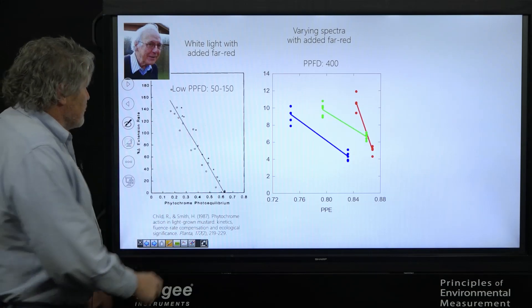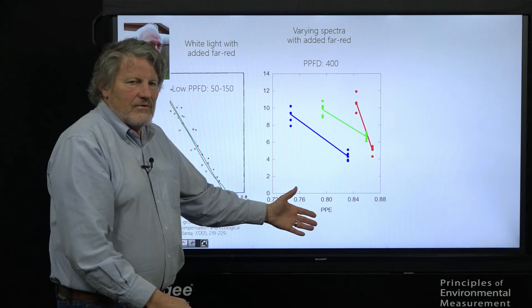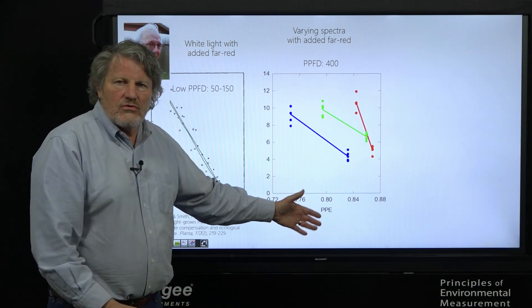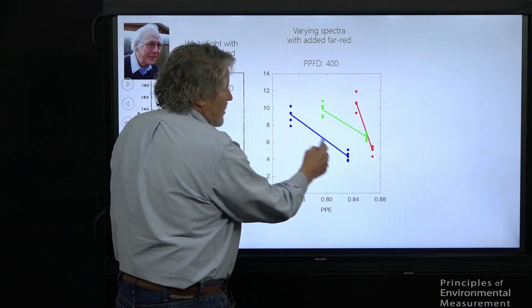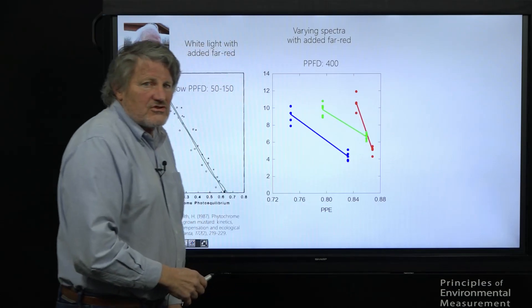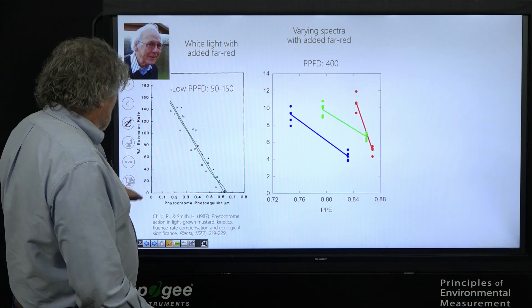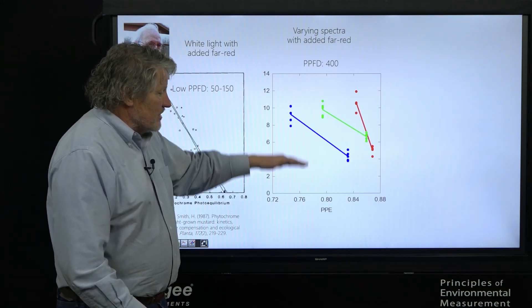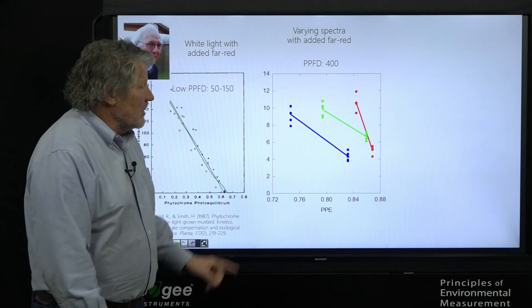Here's Professor Smith's original graph. Nice. Here's the same phytochrome photo-equilibrium. The data scatters. The chamber with high blue, all of them slope down, but they have big offsets. And you can see from this data, you can't predict stem elongation from PPE because it varies with the background color.